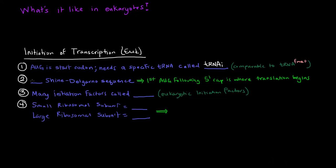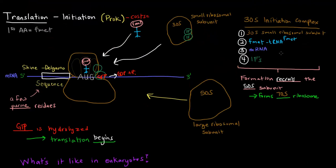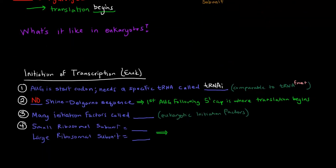The second thing is that there is no Shine-Dalgarno sequence. The first AUG following the 5' cap is where translation begins. So it's not the first AUG after a particular sequence, it's just the first AUG that would come after the 5' end of an mRNA strand in a eukaryote is where translation would begin.